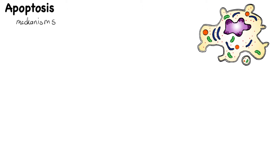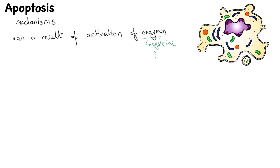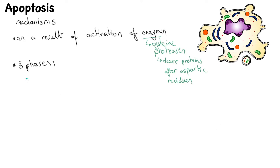Apoptosis happens as a result of activation of enzymes called caspases. Caspases are cysteine proteases that cleave proteins after aspartic residues — meaning they go through the protein chain and cut it right after the aspartic residue. The apoptosis process can be divided into three phases: the initiation phase, the execution phase, and the degradation phase.